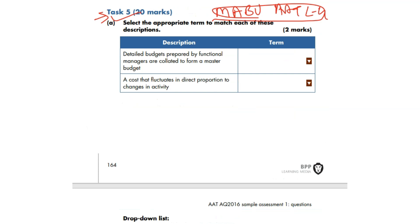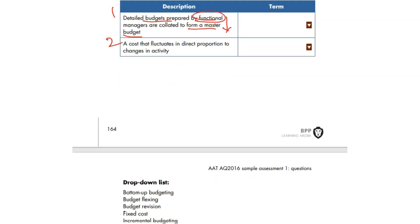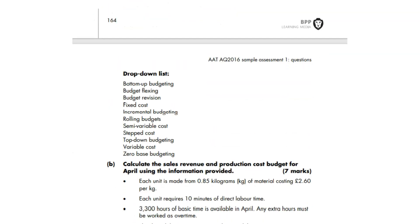Let's go over this particular question and get started by reading it. 'Select the appropriate term to match each of these descriptions.' Number one: 'Detailed budget prepared by functional managers' — functional managers are floor-level managers — 'or collated to form a master budget.' So bottom-level managers made a master budget. Let's see the drop-down list. They already said 'bottom-up budget'; this is the best answer here.